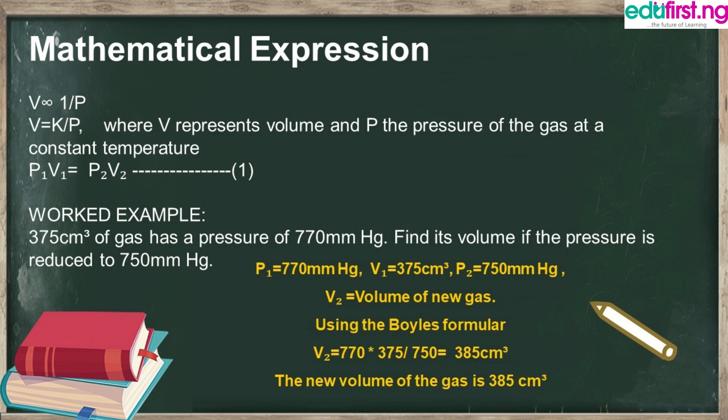Using the Boyle's Law formula and making V₂ the subject: V₂ = P₁V₁/P₂. Inserting our figures: V₂ = (770 × 375) / 750, which gives us 385 cm³. So the new volume of the gas is 385 cm³.